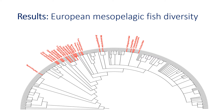Our first result was the diversity checklist. To produce a mesopelagic fish checklist, we first had to create a general checklist. Here we can see a phylogenetic tree representing the 276 families found in all European marine regions, with red points representing the 25 mesopelagic fish families. We can see that mesopelagic fish is not a monophyletic group, which is interesting information.